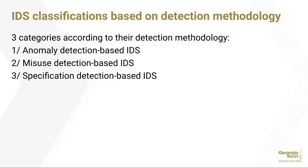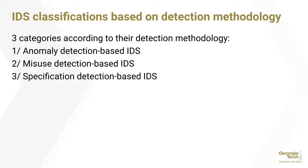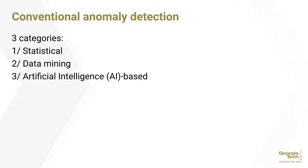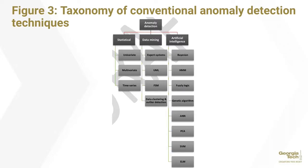Looking at IDS classification based on detection methodology, these can also be broken down into three subcategories: anomaly detection-based IDS, misuse detection-based IDS, and specification detection-based IDS. For conventional anomaly detection, there are three different ways to go about that: statistical, data mining, and artificial intelligence-based methods. Looking at figure three of the paper, they show a taxonomy of how they break these down, and I'll talk briefly about each of these sections.